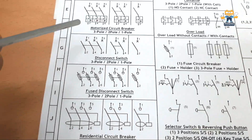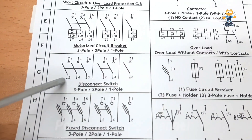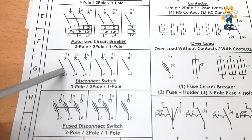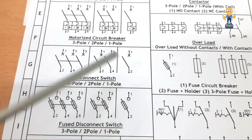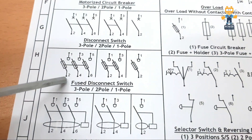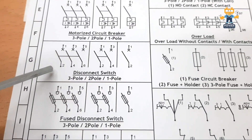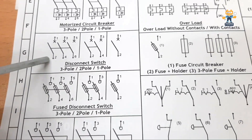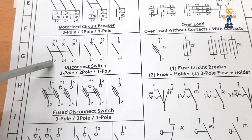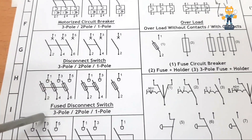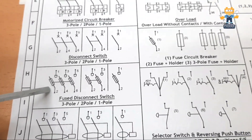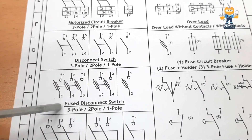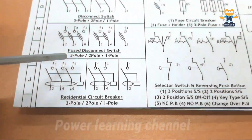This is a disconnect switch — only a switch without any protection, a normal disconnect switch. We have three-pole, two-pole, and single pole. After that we have the fused disconnect. The simple disconnect switch has no protection — it only connects and disconnects the circuit. The fused disconnect has a fuse, so in case of any overcurrent the fuse will melt and the circuit will open.